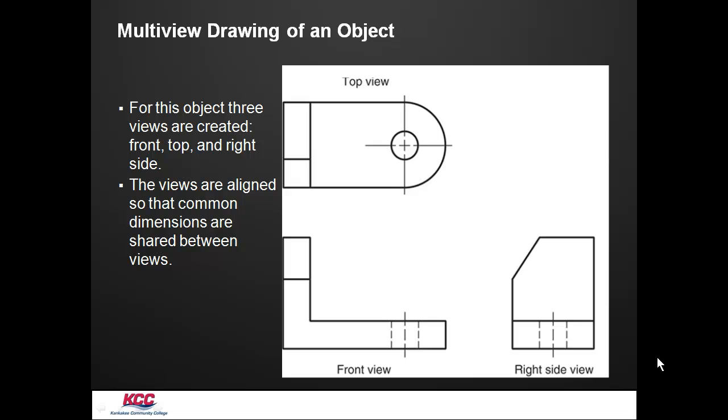Typically a multi-view drawing is a 2D drawing that shows different views that are aligned so that dimensions can be placed in that drawing. The most common is a front view, a top view, and a right side view of the object.